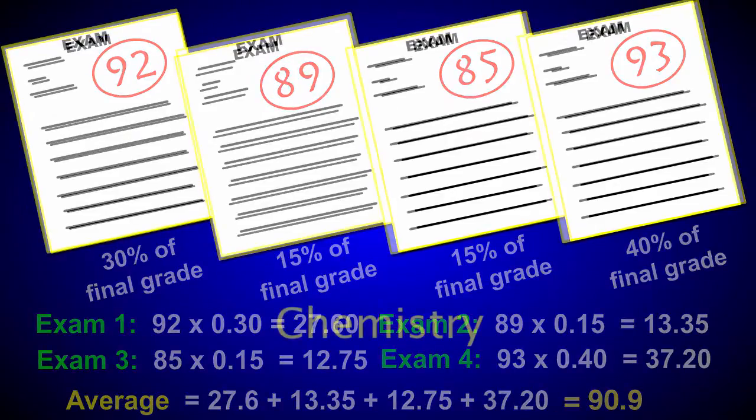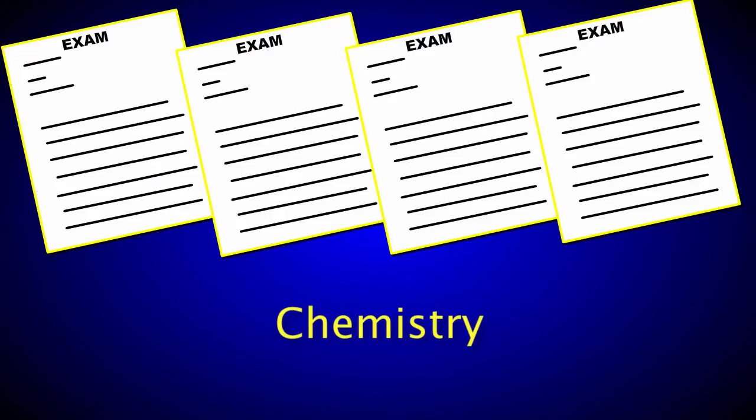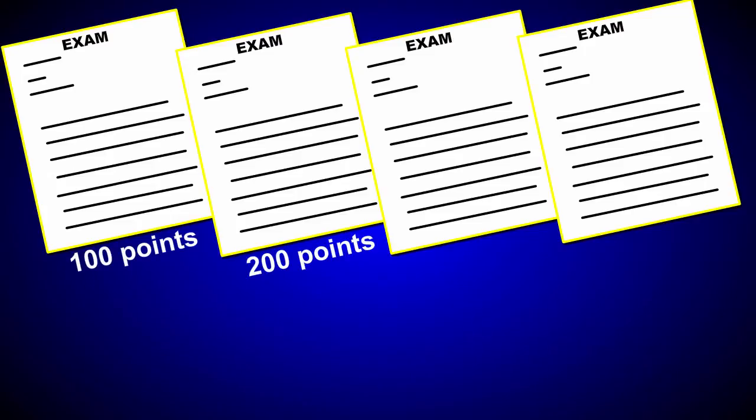In your chemistry course, your instructor uses a point system to assign and calculate grades. The first exam is worth 100 points, the second 200, the third 50, and the fourth 150.